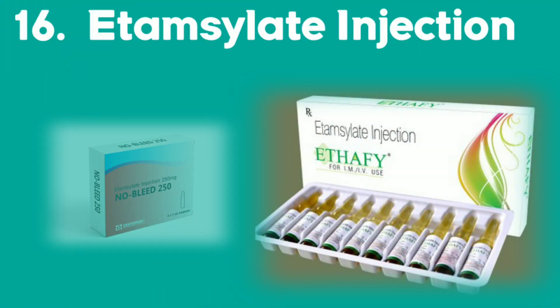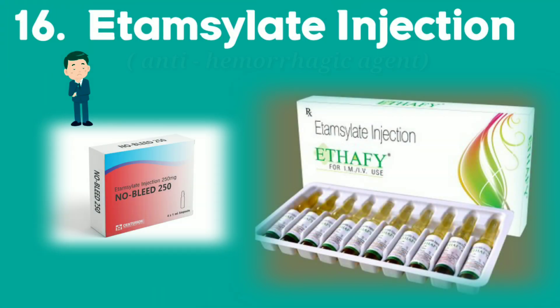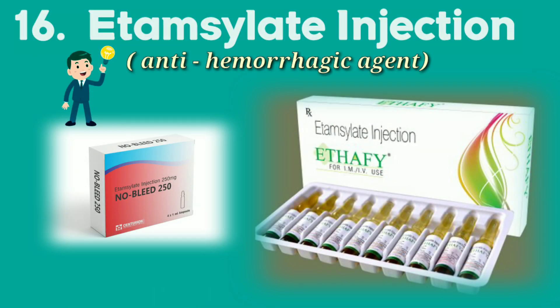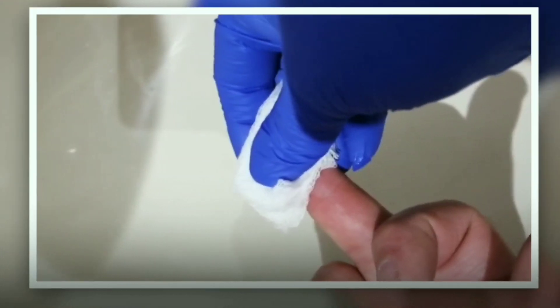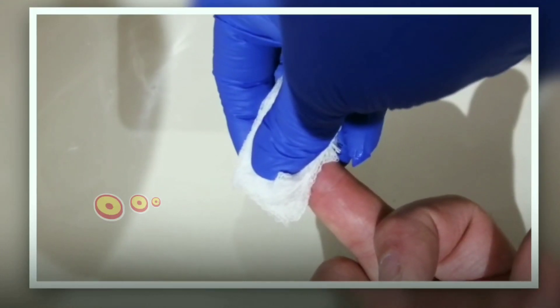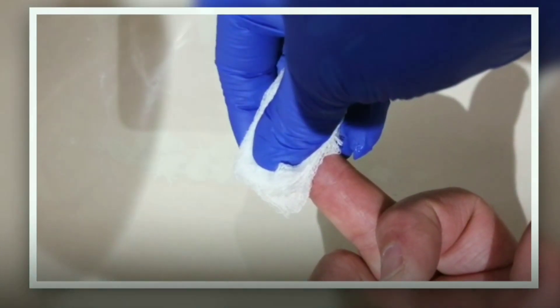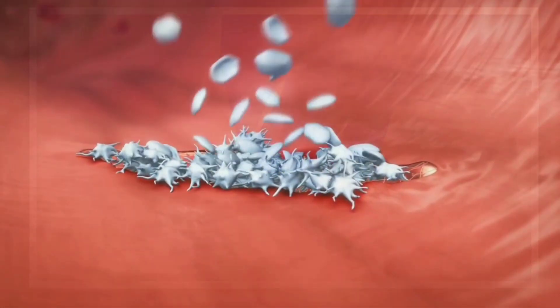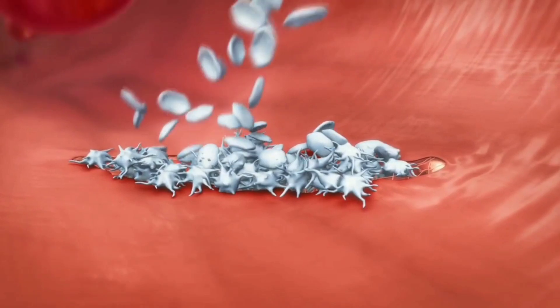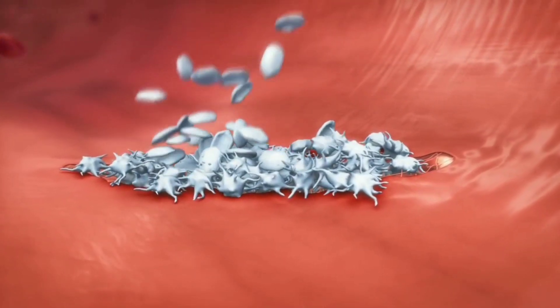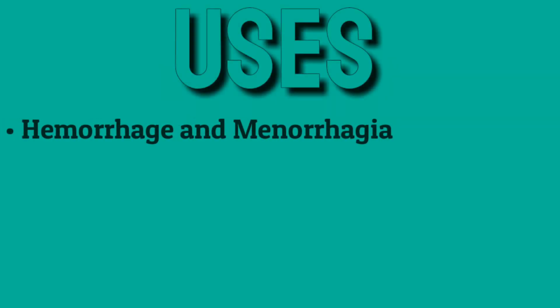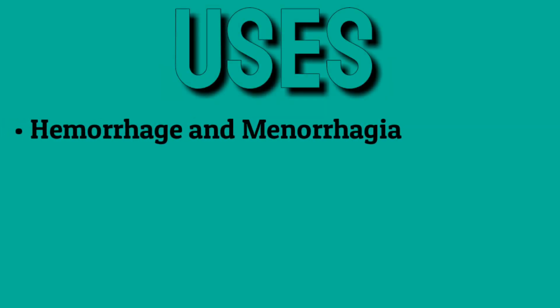Drug number 16 is etamsalate, and it is an anti-hemorrhagic agent. It is used in treatment and prevention of capillary bleeding. It increases resistance in endothelium and promotes platelet adhesion. Hence it is used in hemorrhage and menorrhagia.